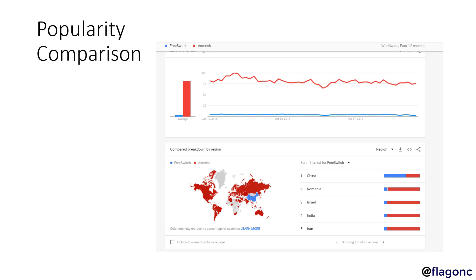Regarding popularity, FreeSwitch is still a lot less popular than Asterisk. I brought this comparison because people will compare, and it's important to show that there is a difference in popularity. But FreeSwitch is gaining ground among professionals and people who build large-scale systems — ITSPs. And there's one place in the world where FreeSwitch is more popular than anywhere else: China. In China, there are more searches for FreeSwitch than Asterisk.